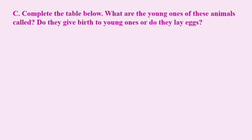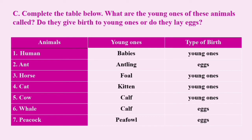Question C: Complete the table below. What are the young ones of these animals called? Do they give birth to young ones or do they lay eggs? We have to write the young one's name and type of birth. Number 1: Human — young one's name: babies, type of birth: young ones. Number 2: Ant — young one's name: antling, type of birth: eggs. Number 3: Horse — young one's name: foal, type of birth: young ones.